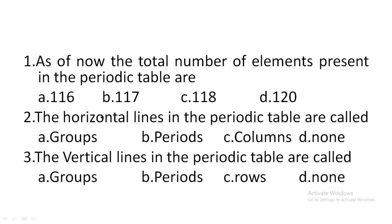First one: as of now, the total number of elements present in the periodic table are — option A: 116, option B: 117, option C: 118, option D: 120. As of now, the total number of elements present in the periodic table are 118. Option C is the correct answer.